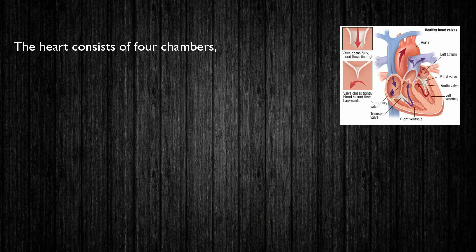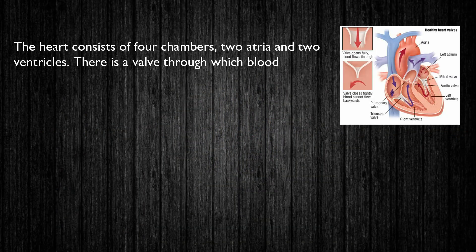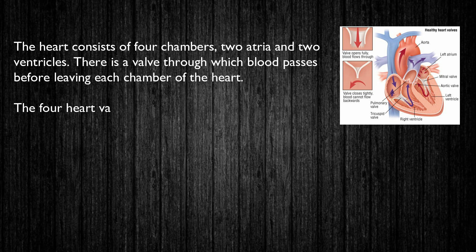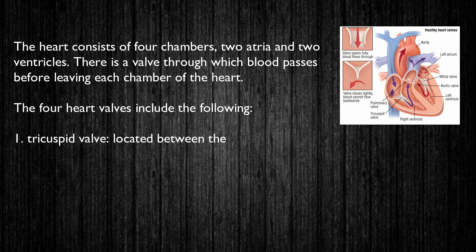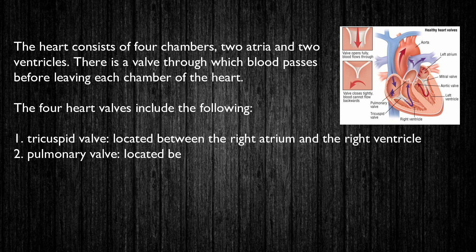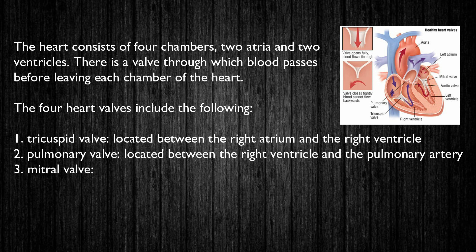The heart consists of four chambers, two atria and two ventricles. There is a valve through which blood passes before leaving each chamber of the heart. The valves prevent the backward flow of blood.